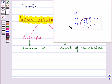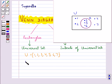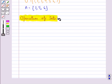Consider this Venn diagram in which the universal set U is given by {1, 2, 3, 4, 5, 6, 7} and this circle is the set A with elements {3, 5, 6}. Next we discuss operations of sets.